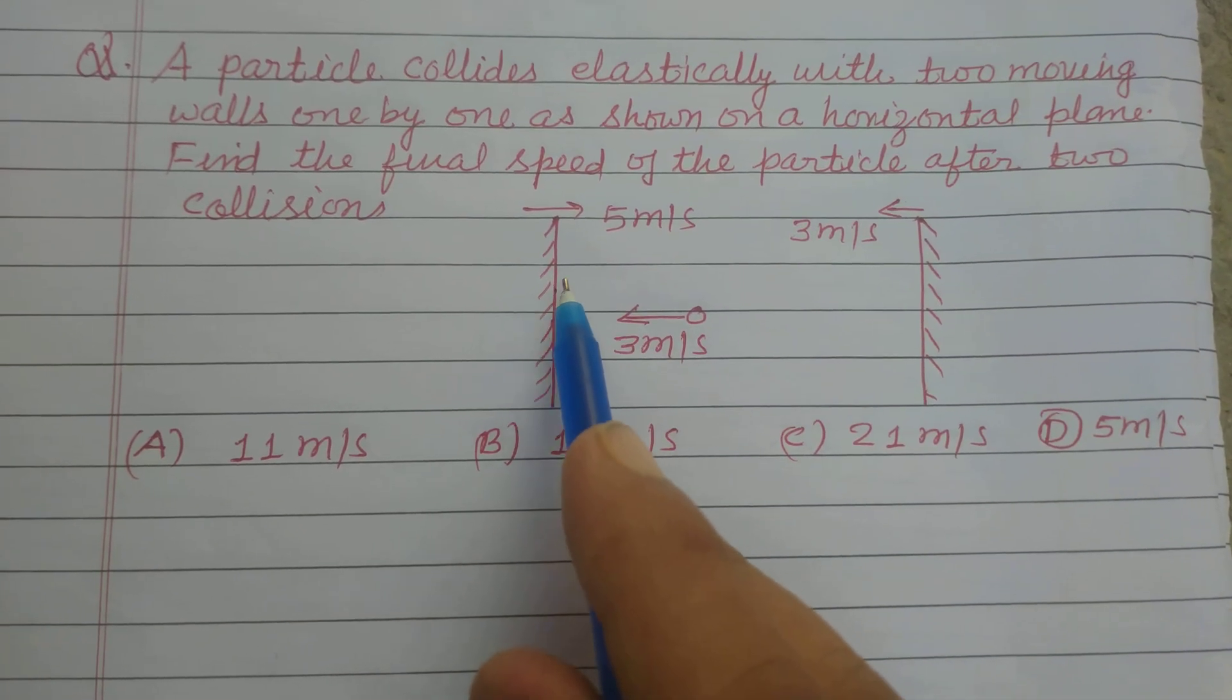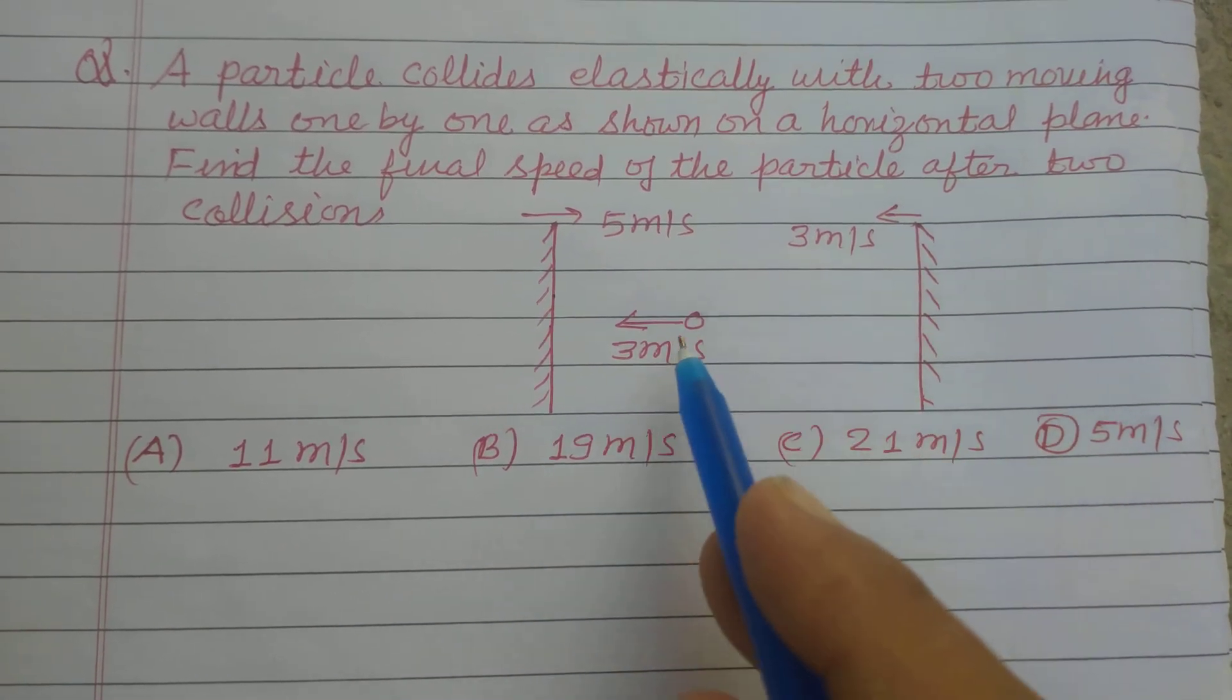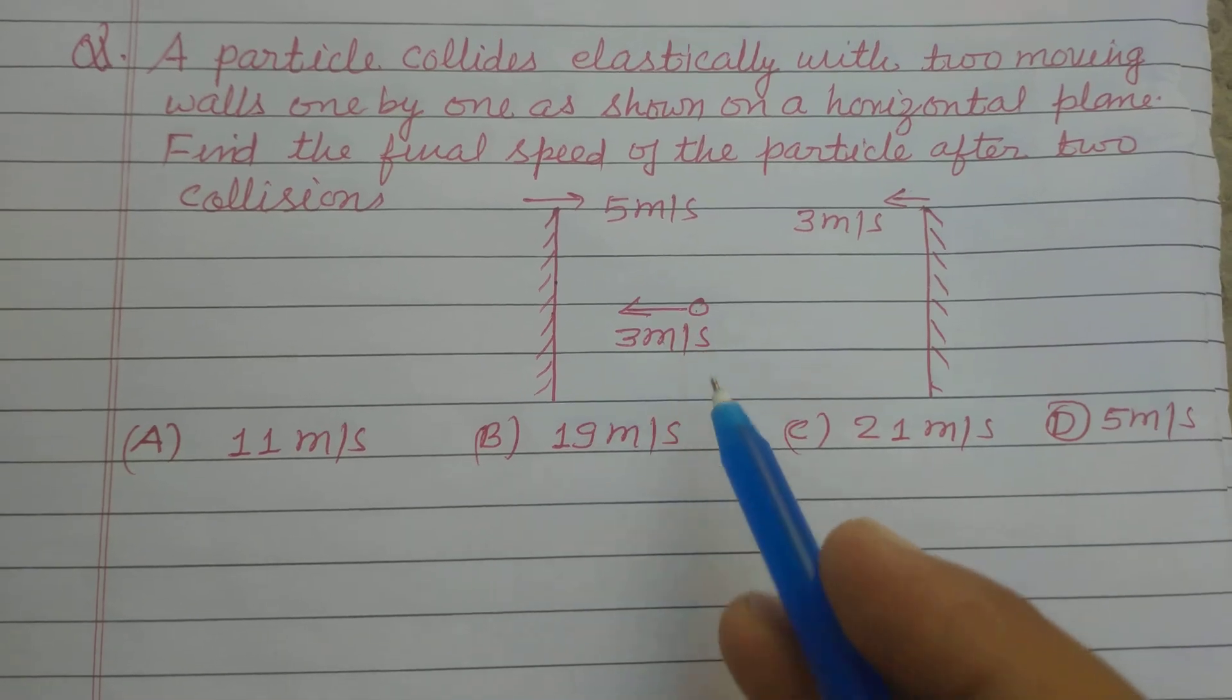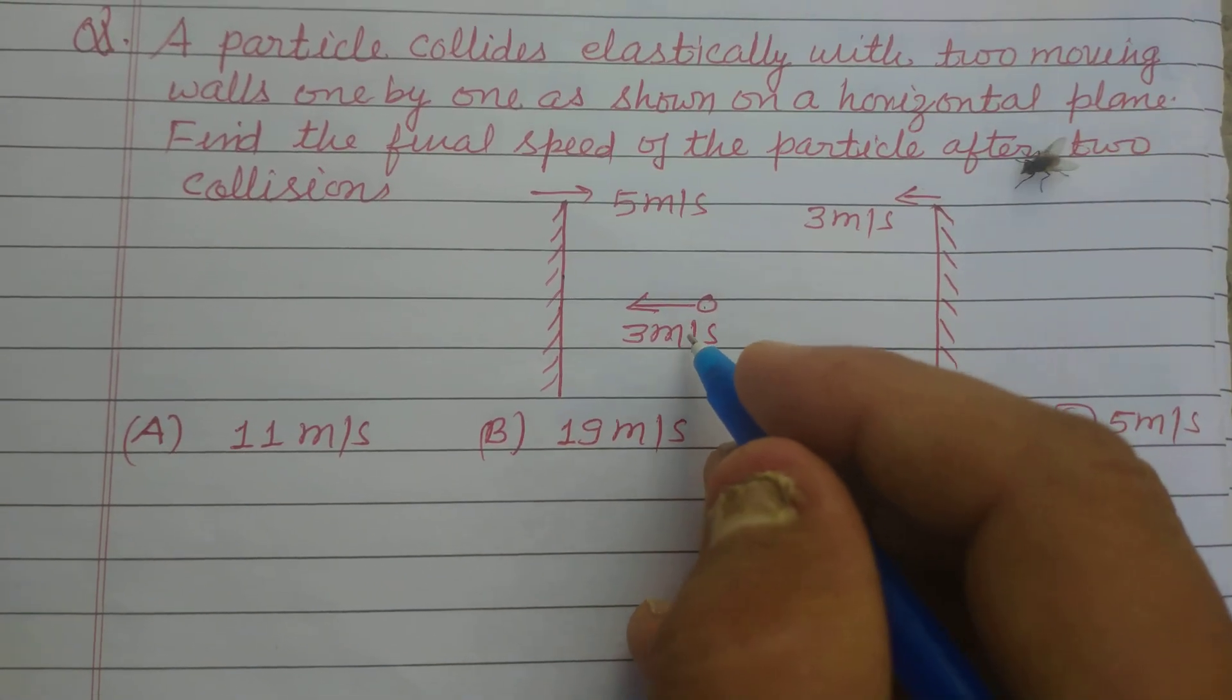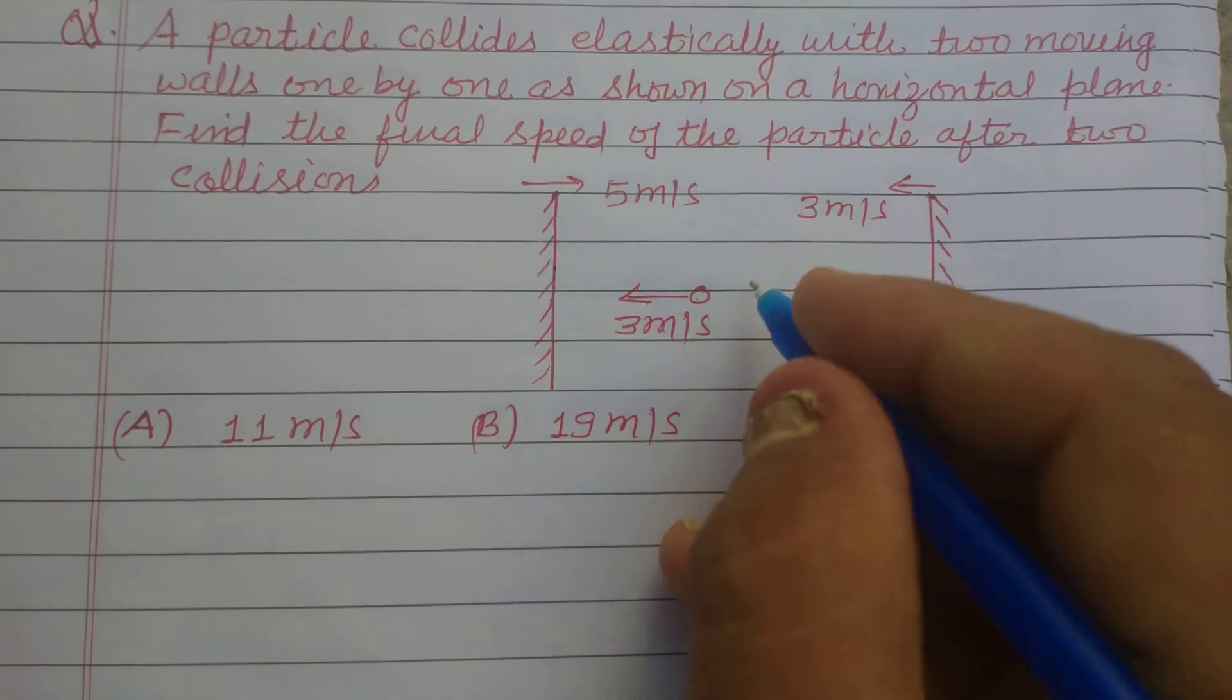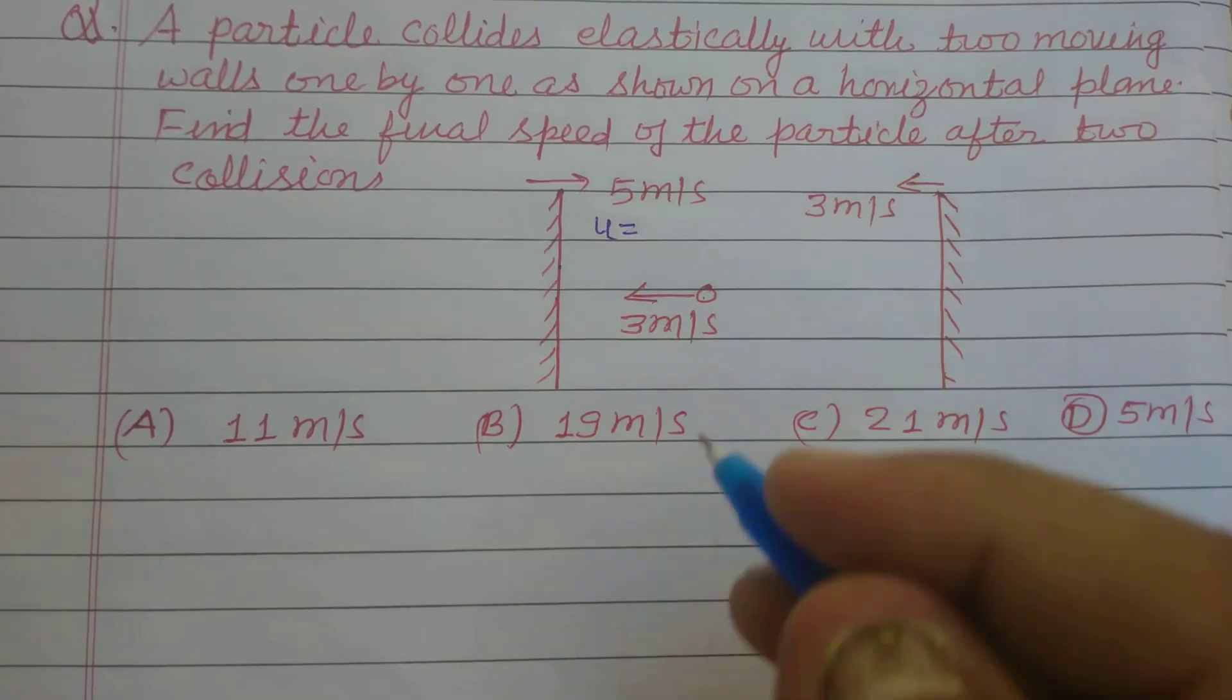There are two balls moving with 5 meters per second and 3 meters per second. The particle is also moving with 3 meters per second. Let the particle's velocity be u, which is the velocity of the...